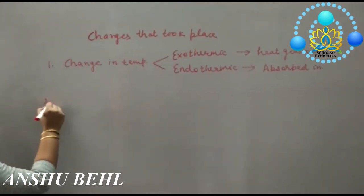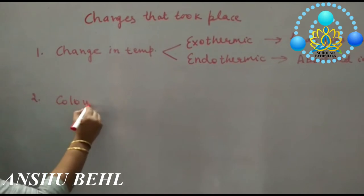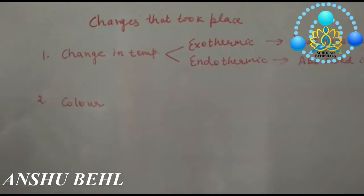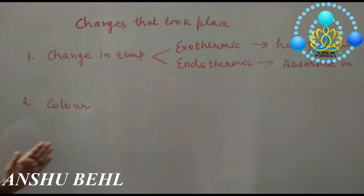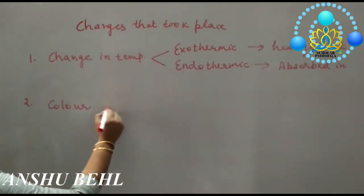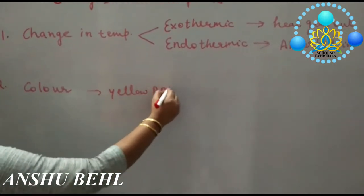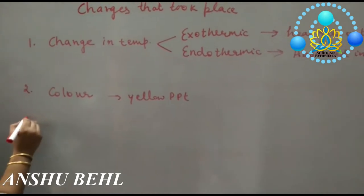Second change may be color change. You have seen in a reaction yesterday that when lead nitrate combines with potassium iodide, yellow precipitates were forming. That can be quoted here as an example.